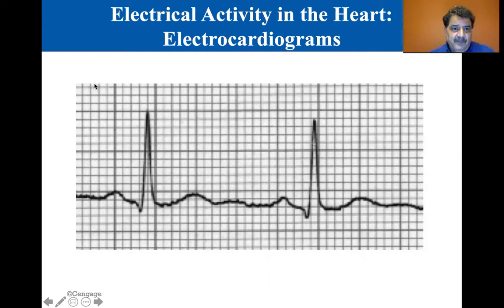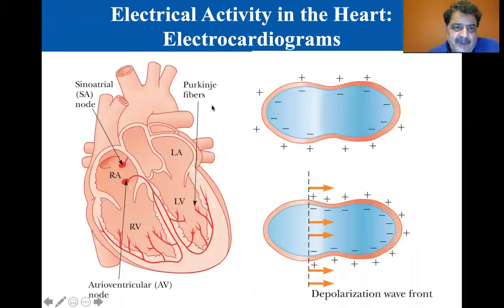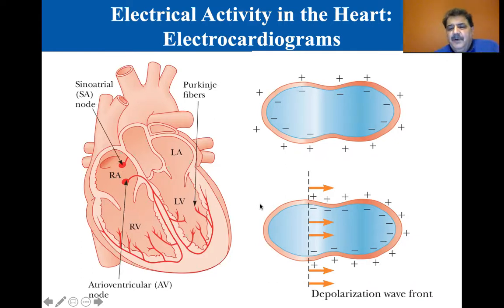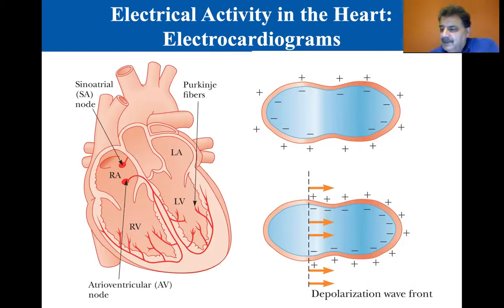From about this area here to about here is one cycle of an EKG. The sinoatrial node is what starts it. There's a depolarization wave front — positive on the outside, negative on the inside. The depolarization wave front kind of neutralizes that, and then it reestablishes itself before the next pulse. You're welcome to read this section on pages 582 to 583.